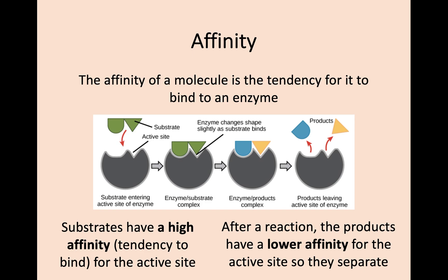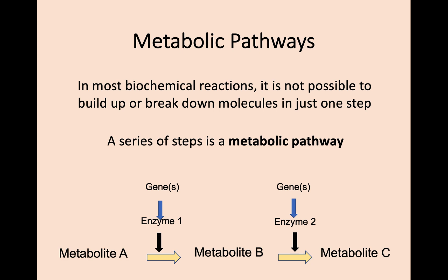In most biochemical reactions, molecules are not just built up or broken down in a single step. Instead, they must be built up or broken down through a series of enzyme reactions — that's called a metabolic pathway. In a pathway, the product of one enzyme reaction can go on to become a substrate for the next enzyme reaction, and so on along this pathway until you produce the final product. One thing to keep in mind is that enzymes are proteins, which means that a mutation on the gene which codes for that enzyme could lead to a faulty enzyme being produced and the pathway not being able to continue any further.